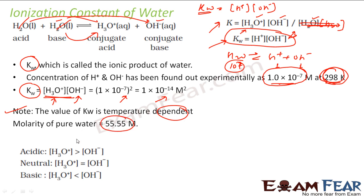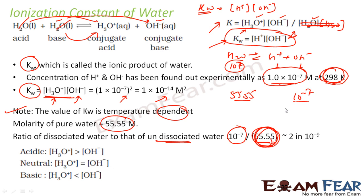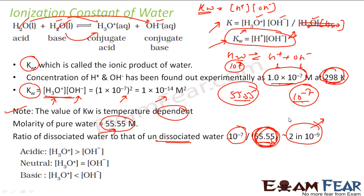The molarity of pure water is 55.55 mol/L. If you want to find the ratio of dissociated water, it is 10^-7 divided by 55.55, because from 55.55 molarity of water, 10^-7 mol/L becomes H+ ions. This ratio equals approximately 2 × 10^-9 — that is the ratio of dissociated to undissociated water.